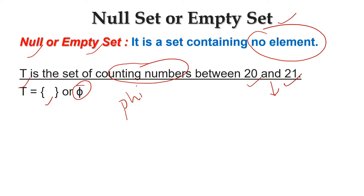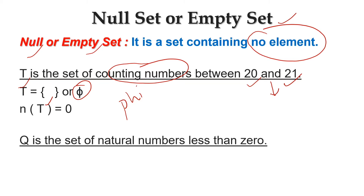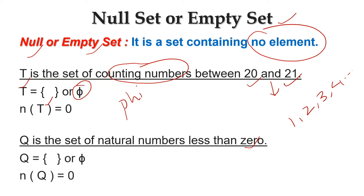Now we will see one more example of null set. Q is the set of natural numbers less than 0. The natural numbers are 1, 2, 3 and so on. There is no natural number less than 0, which means Q has no element. That's why n(Q) equals 0, so Q is an example of an empty set.